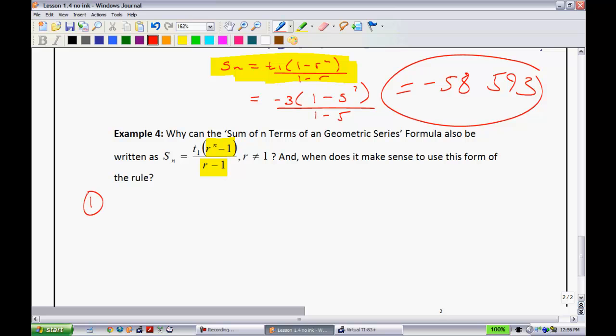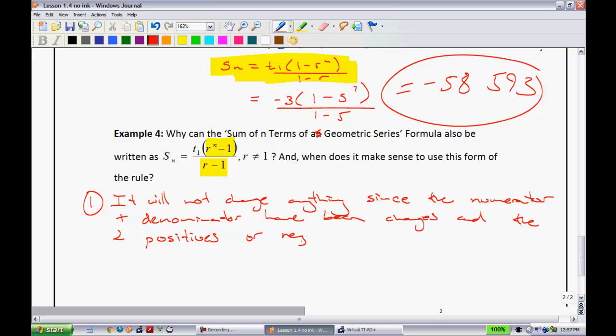Numeral 1. Why can the sum of n terms of a geometric series formula also be written in this different way? Well, if you take a look, my answer would be it will not change anything since the numerator and the denominator have been changed. And the two positives or negatives will not change the outcome.